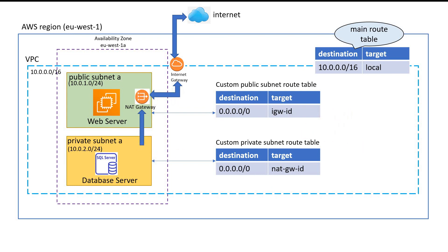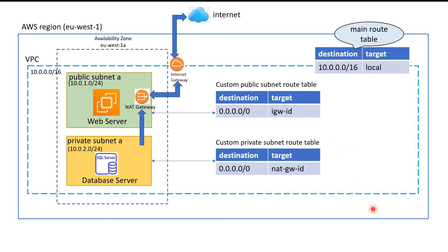In this way we can control the communication of resources using route tables in our infrastructure. This was a basic introduction to routing in AWS networking. In the upcoming videos we will discuss these things in more detail with multiple subnets and multiple availability zones. If you liked the video, please comment or give your valuable suggestions, and consider subscribing to my channel for more such videos. Thank you.